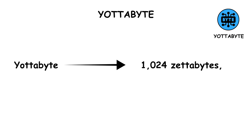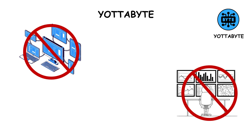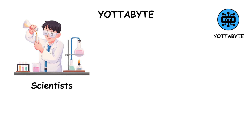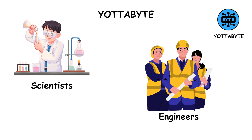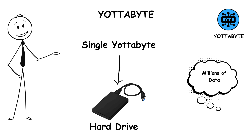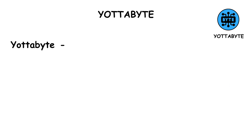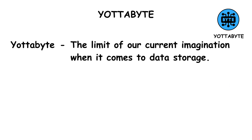A yottabyte equals 1,024 zettabytes, or roughly 1 septillion bytes — that's a one followed by 24 zeros. No computer or data center on Earth can store a full yottabyte yet, but it's a concept that helps scientists and engineers understand just how large digital data could one day become. If you tried to store a single yottabyte on normal hard drives, it would require millions of data centers and more electricity than some countries produce. In simple terms, a yottabyte represents the limit of our current imagination when it comes to data storage.